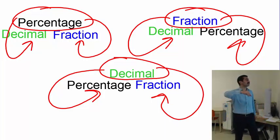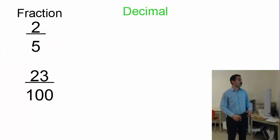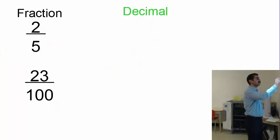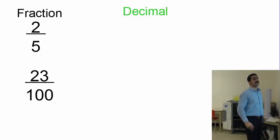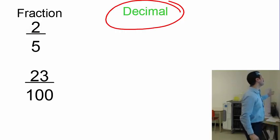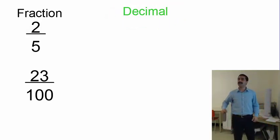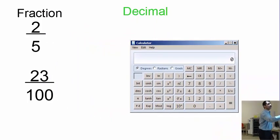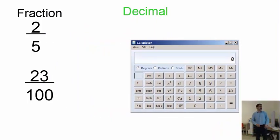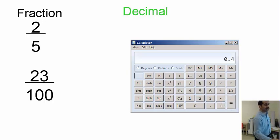Let's jump to the examples immediately. I'm looking at fractions here, and it's asking me to change them to decimals. Very simple — just pick up your calculator. All you have to do is do the fraction two over five: two divided by five.